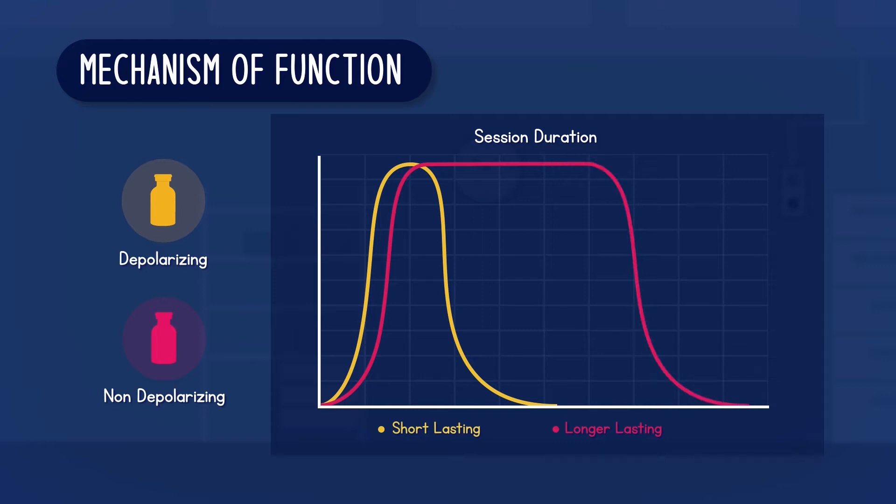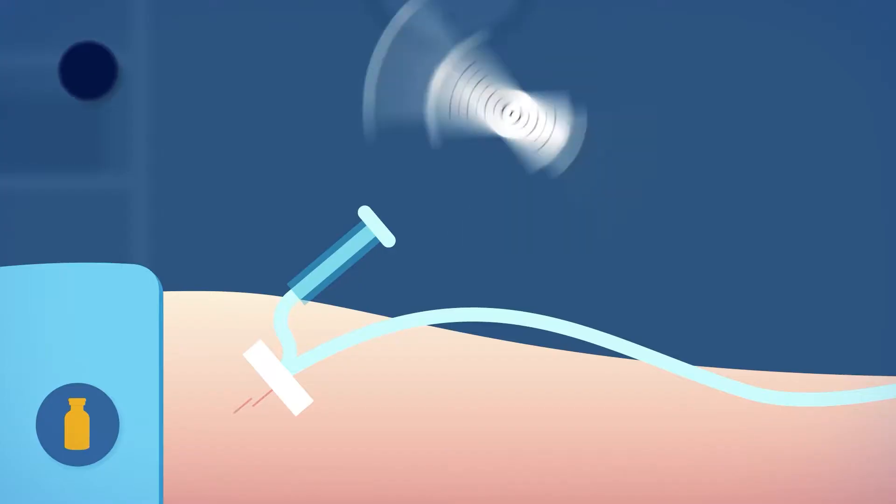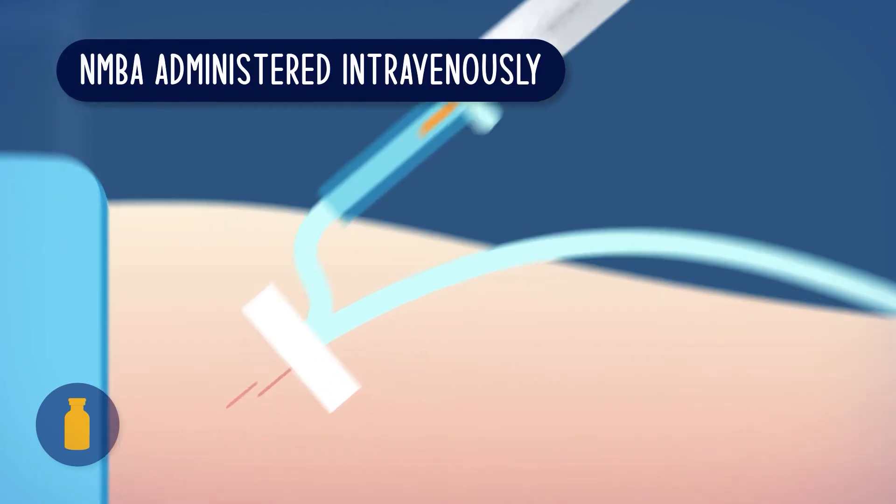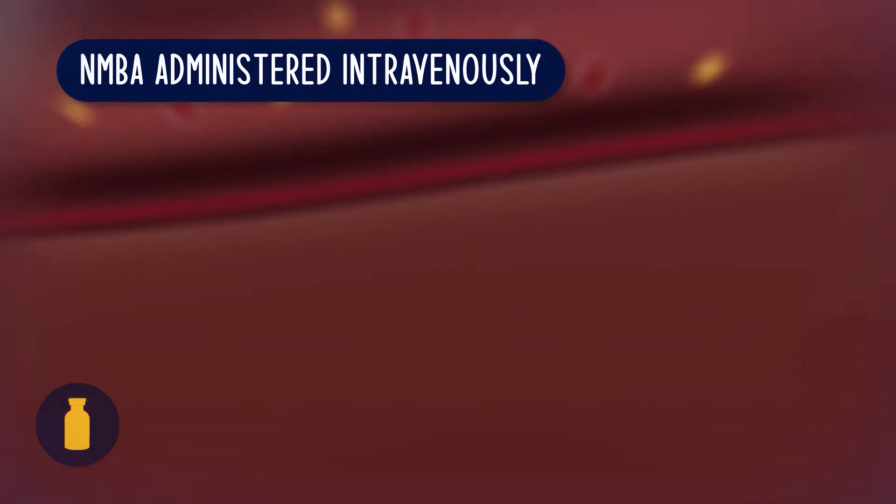When taking a closer look we can see they function as follows: a blocking agent is intravenously introduced into the bloodstream and enters the neuromuscular junction.